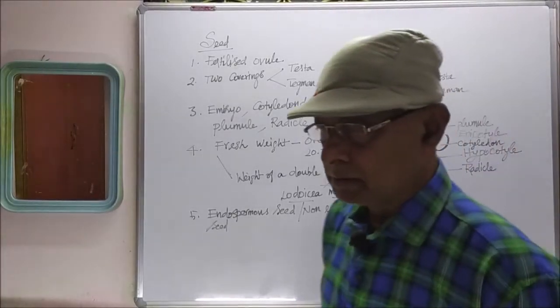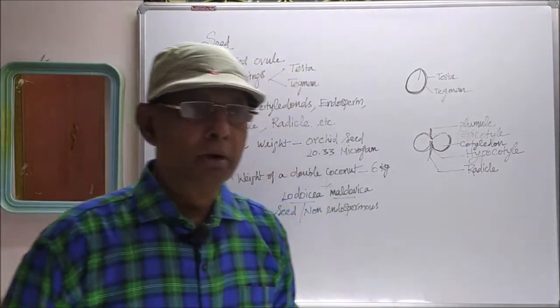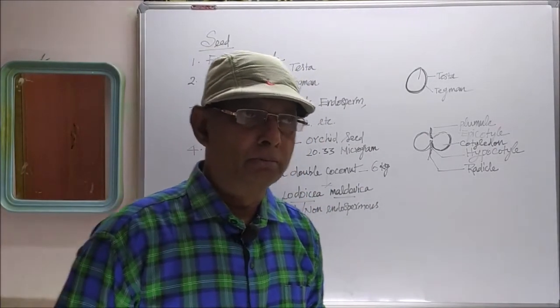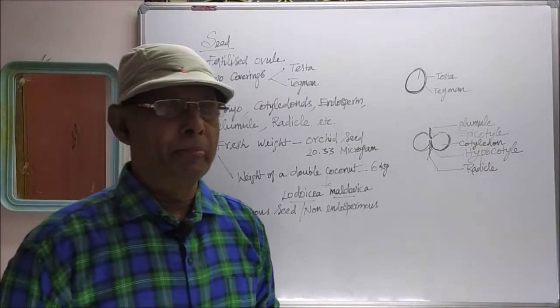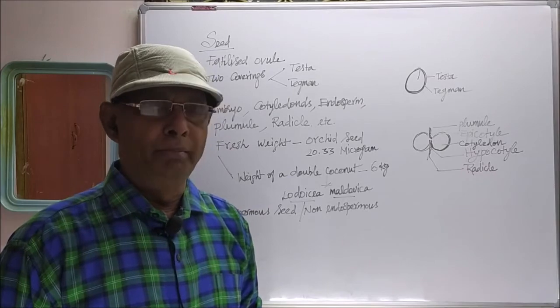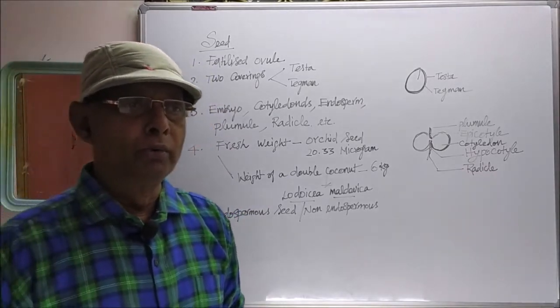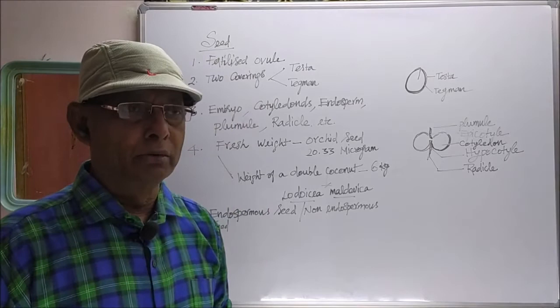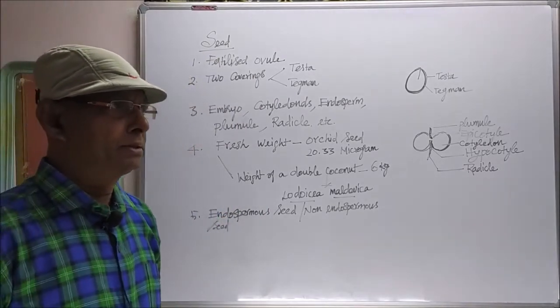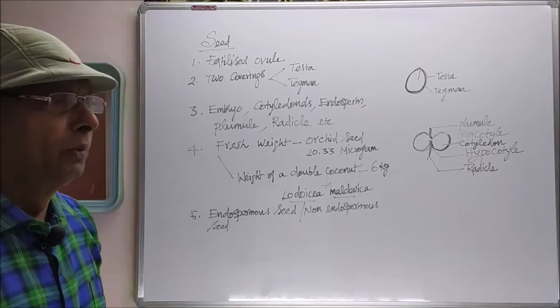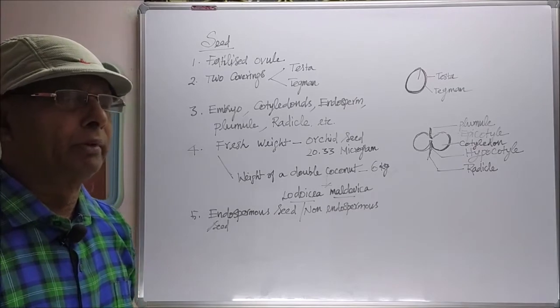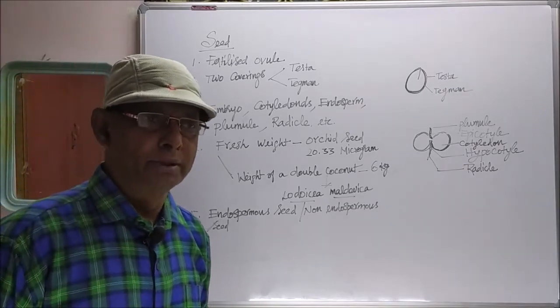My dear students, now we will see about the seed. Seed is formed after fertilization. After fertilization, the ovary becomes the fruit and the ovules convert into seeds. Seeds will germinate into a new plant if you provide all the conditions.